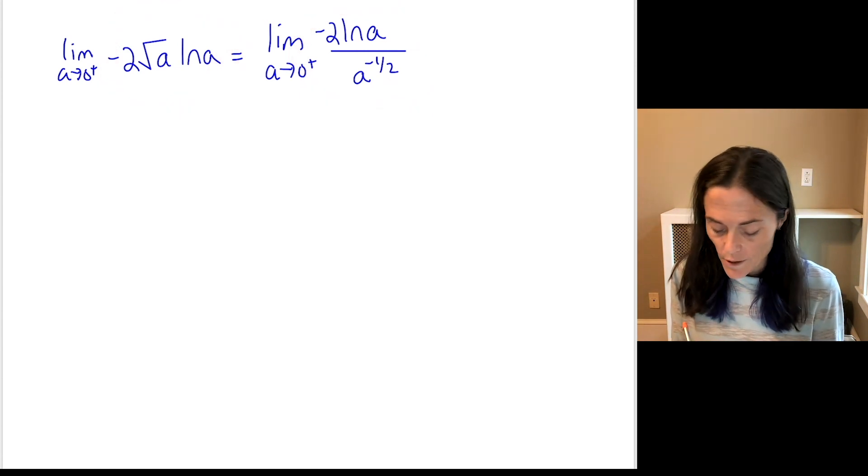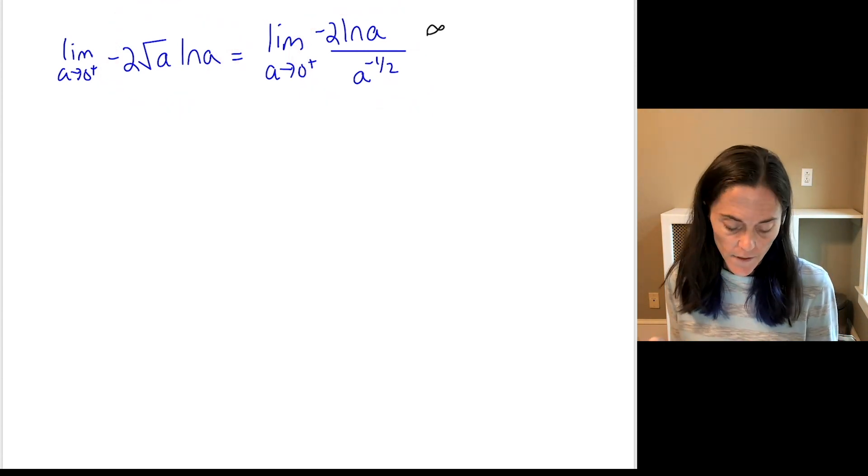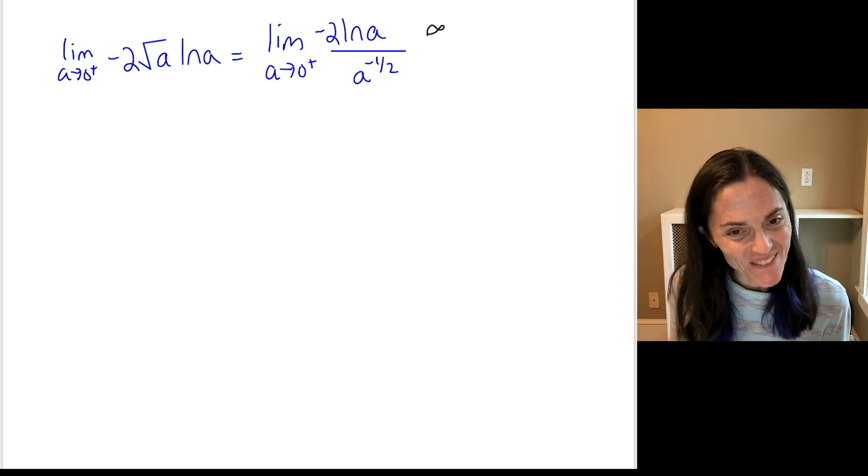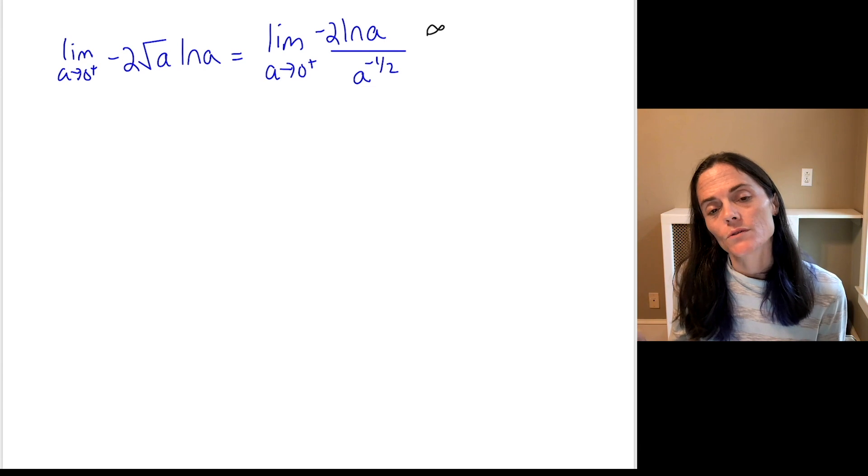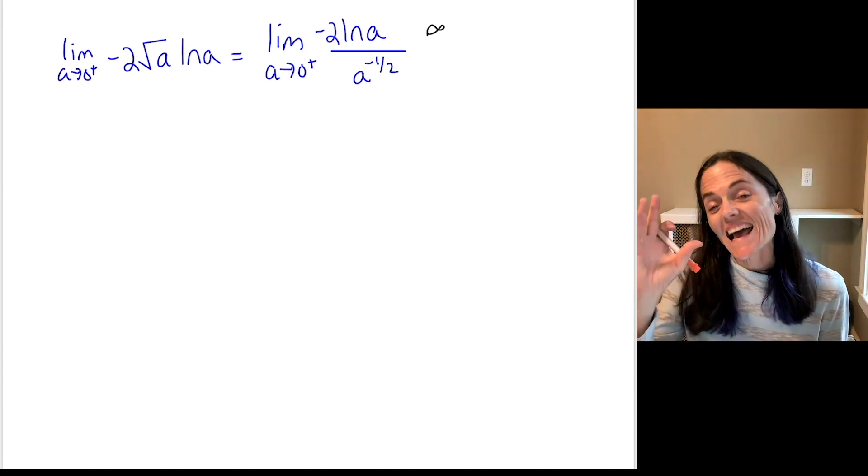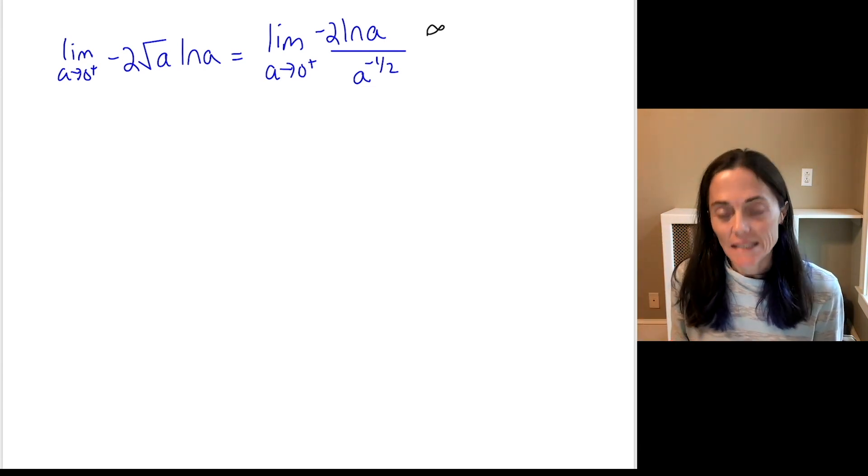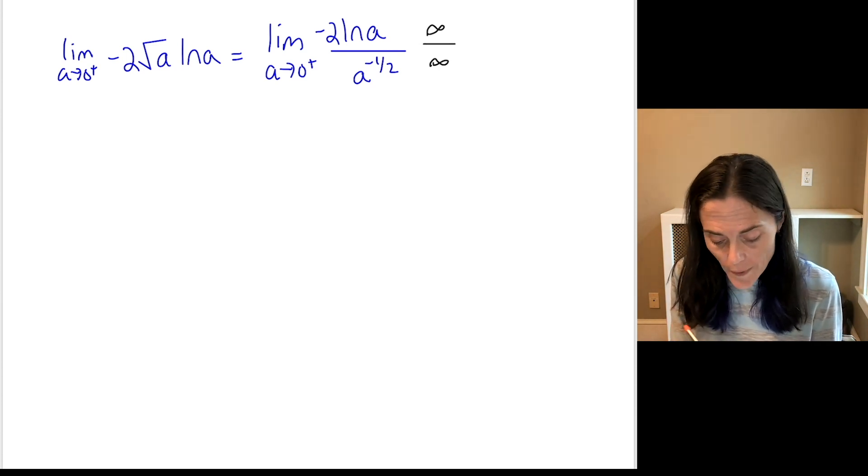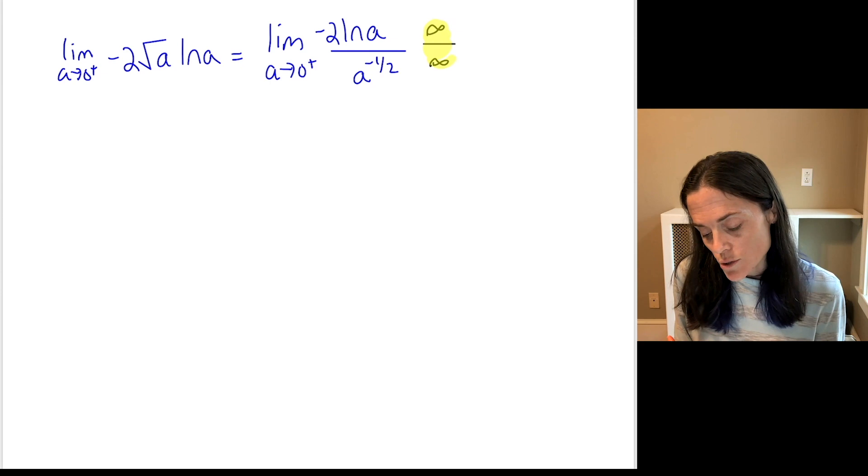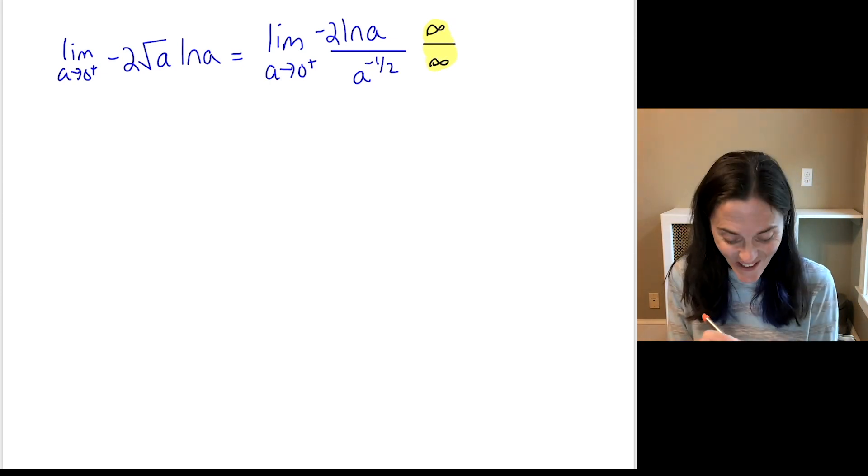But the reason I did this is because now as a approaches 0 from the right, you see, numerator, well, it's now going to positive infinity because of the negative 2. And 1 over the square root of a as a approaches 0. This is also going to infinity. So, now I have an indeterminate form, but it is of the type that I can use L'Hopital's rule. This is wonderful.